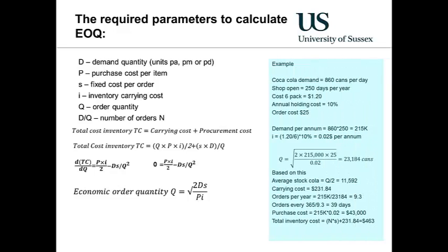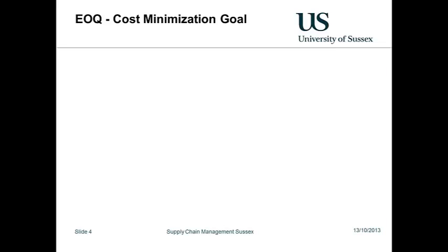This example shows an economic order quantity of 23,000 cans, and a holding and carrying cost both equal to $231, which is expected as holding cost balances purchase cost at the economic order quantity point.